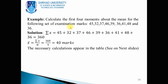First, find the sum of all terms: sigma x = 45 + 32 + 37 + 46 + 39 + 36 + 41 + 48 + 36 = 360. To find the mean of the data, use the formula sigma x divided by the number of terms: 360 divided by 9, which equals 40.